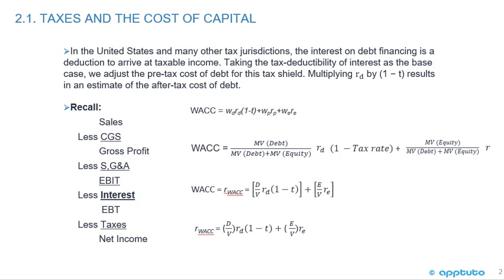Recall from our basic income statement: sales minus cost of goods sold is our gross profit. Less selling, general, and admin gives us our EBIT — earnings before interest and taxes. We then deduct the interest, which is tax deductible, giving us our earnings before tax. Less taxes gives us our net income. This LOS is talking about the effect of taxes.